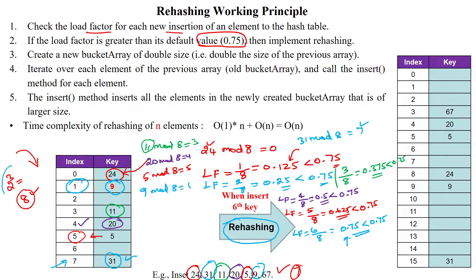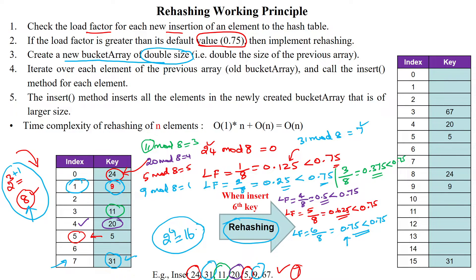For rehashing, the current table size is 2 to the power 3, equal to 8 memory locations. This power of 3 is incremented by 1, giving 2 to the power 4, which is 16 memory locations. We create a new hash table — a new bucket — double the size of the previous hash table. Then we iterate over each element of the existing hash table and call the insert method for each element into the new hash table.